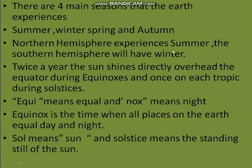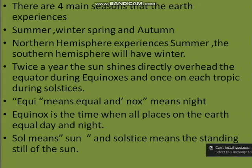The northern hemisphere experiences summer while the southern hemisphere has winter. Twice a year, the sun shines directly — once during each equinox and once over each tropic during the solstices.